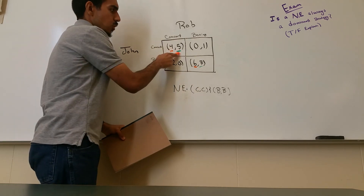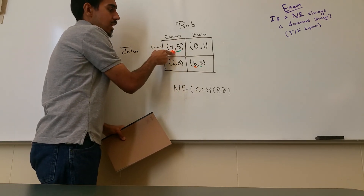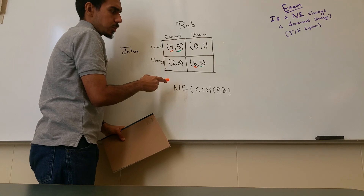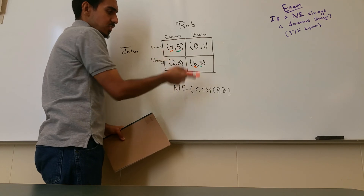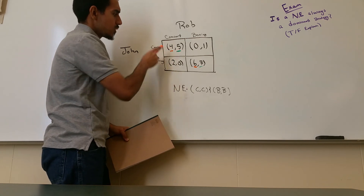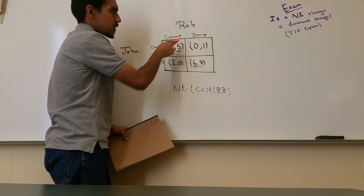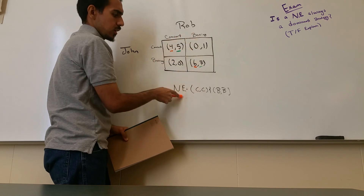Whatever box has two underlines is a Nash equilibrium. We see here we have two Nash equilibriums: concert/concert and boxing/boxing.